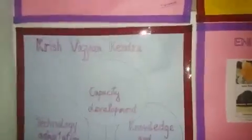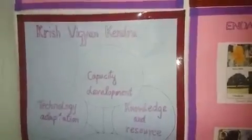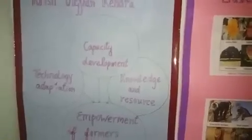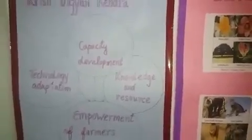Next is bio-indicator, showing how pollution is happening and the organisms involved. Then seed ball — we can distribute seed balls for growing plants all over. Then there is Krishi Vigyan, our country's agricultural organization, which provides capacity development, knowledge, and resources to farmers.